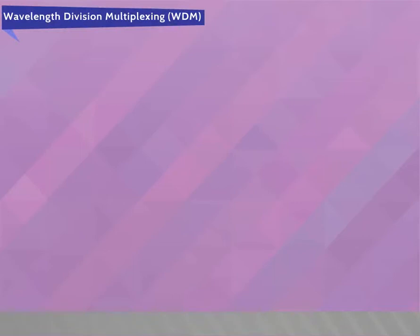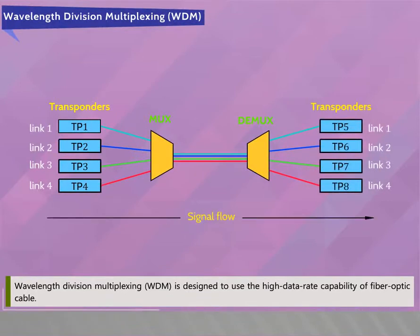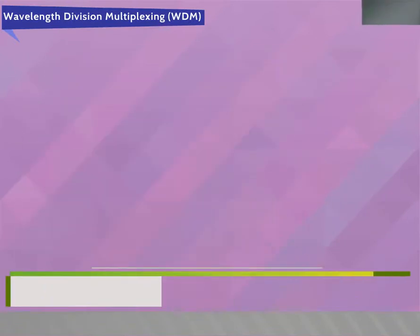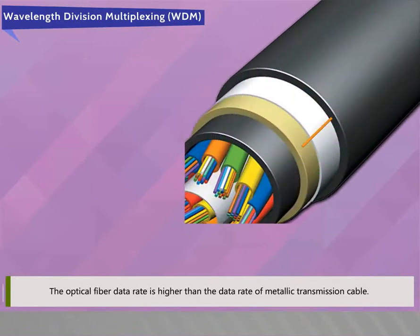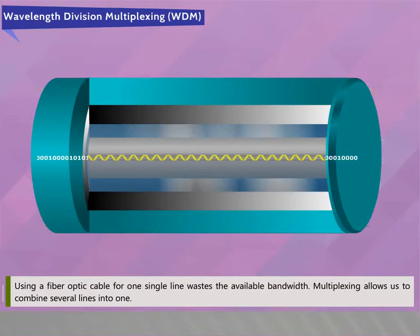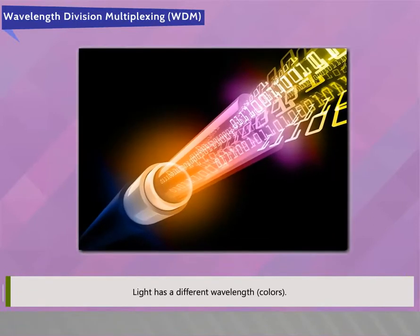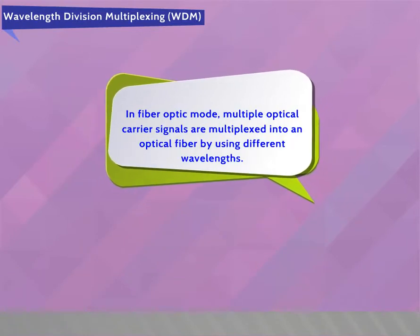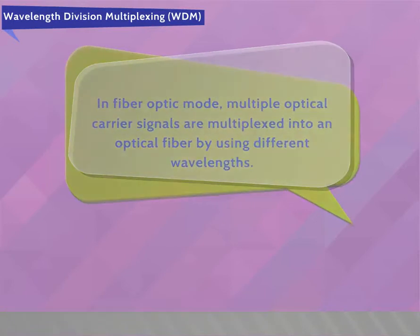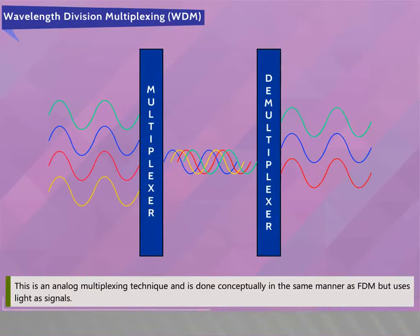Wavelength Division Multiplexing (WDM) is designed to use the high data rate capability of fiber optic cable. The optical fiber data rate is higher than that of metallic transmission cable. Using a single fiber optic cable line wastes available bandwidth, so multiplexing allows us to combine several lines into one. In fiber optic mode, multiple optical carrier signals are multiplexed into an optical fiber by using different wavelengths (colors of light). WDM is an analog multiplexing technique done conceptually the same way as FDM but using light as signals.